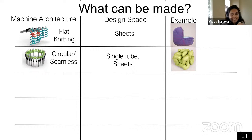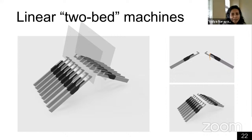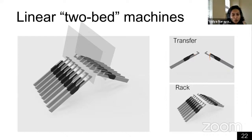A single layer of needles was quite clearly useful, so why not add two layers? First, it obviously gives us two layers to work with. But more importantly, we can now add new operations to the machine. The first operation is called transfer: it can take a loop on a needle on one bed and move it to the needle directly across on the opposite bed. The next instruction is called rack: it translates one of the beds with respect to the other. So now we have transfer and rack in addition to the knit operation. These let you move loops around, which enables widening and narrowing your fabric.